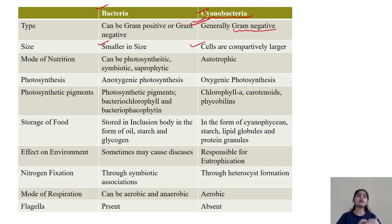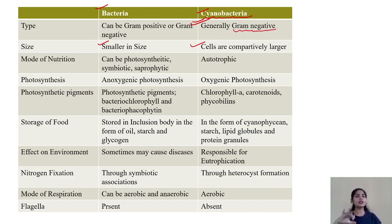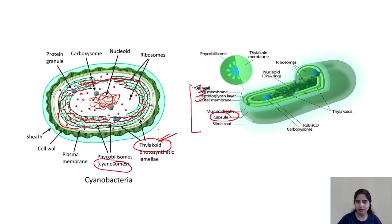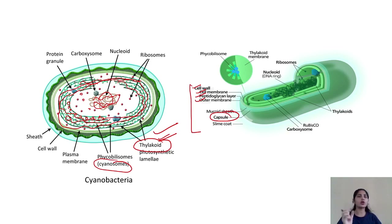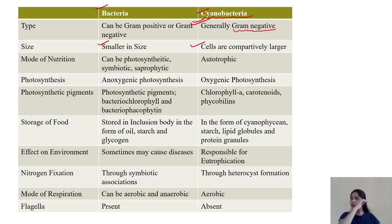Regarding the origin of cyanobacteria, we believe that their origin involves the endosymbiosis process. In endosymbiosis, a large bacterial organism engulfs a small bacterial organism, and through this process a membrane-bound organelle is formed — the thylakoid. It is believed that cyanobacteria originated from prokaryotic cells. After engulfing the smaller photosynthetic organism, the pigment-containing thylakoid structures were formed.